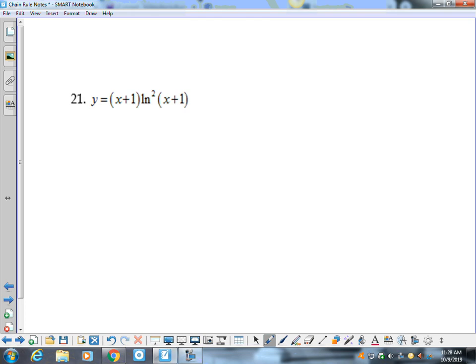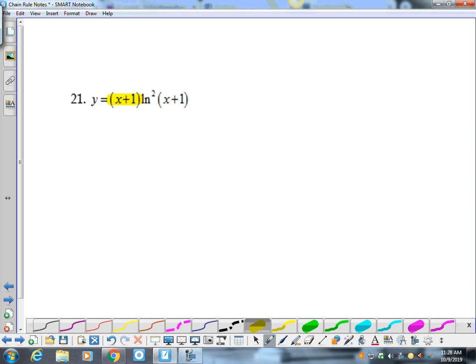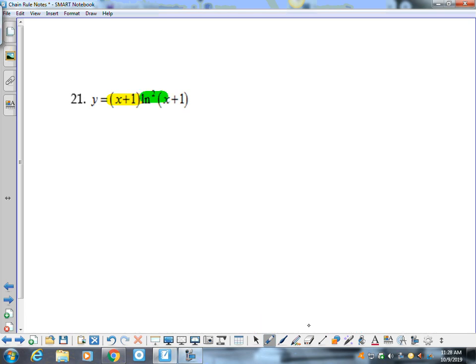Okay, last one. Big picture. I have this function times this function. So my overall I'm a product rule. but inside my product rule I'm going to have a chain rule when I do the LN because he has a power and an of. Okay. So here I go.